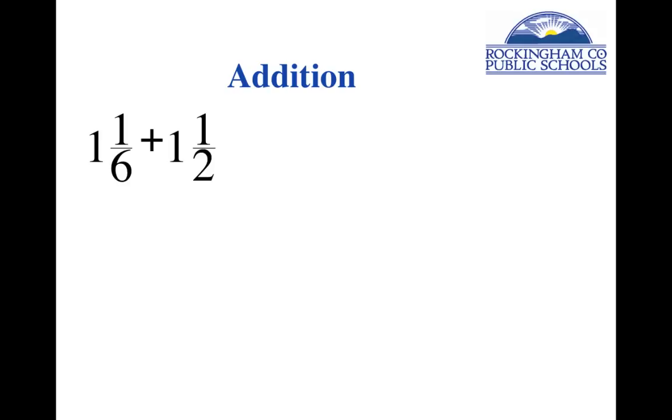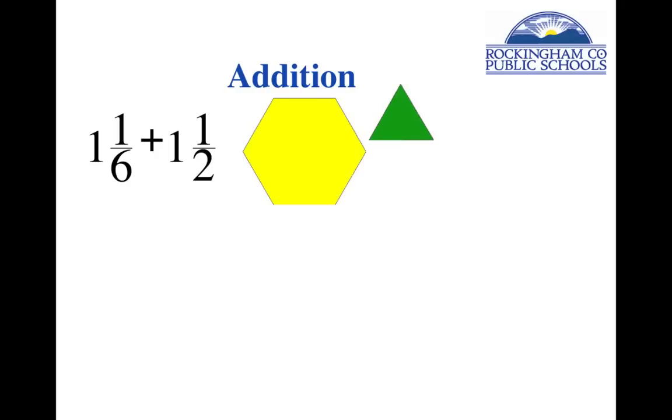Okay, now let's add mixed numbers. This is not done typically until way after we've added fractions with like and unlike denominators. But with pattern blocks, we can do it on day one. Let's add one and a sixth plus one and a half. Would you do it, please? Put your pieces together. Trade so that you can get the same shape on the last one. And our answer must be two and two thirds.